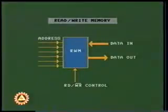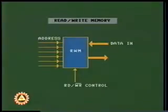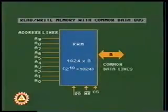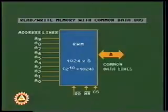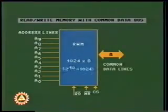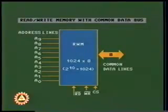We now consider a package of read-write memory. Like a read-only memory it has address lines and data output lines. Additionally, it has data input lines as well as read-write control lines. Consider another example of a read-write memory chip: it has eight common data lines, a read-write control line, and 10 address lines that can locate 1024 — that is 1K — locations. It also has a chip select line CS, which we will discuss in a subsequent lesson.